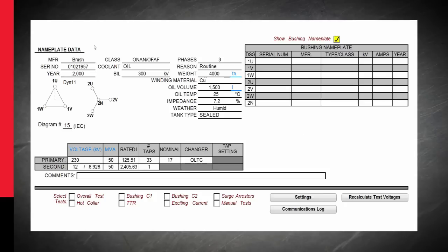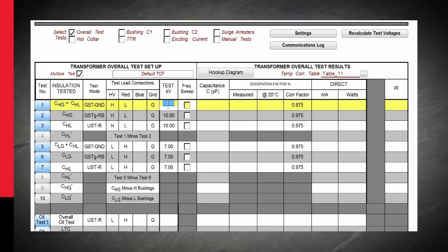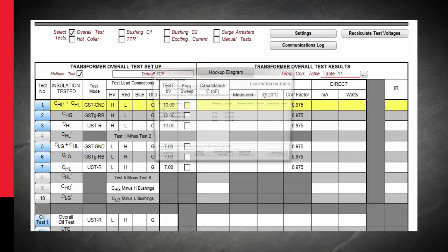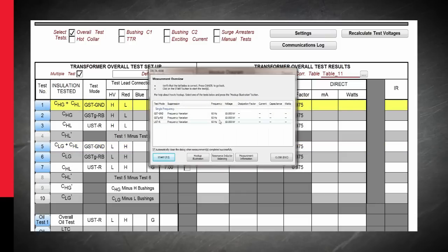We are now required to fill in nameplate information on our two winding transformer form. This includes critical information such as oil temperature, required to evaluate test results. Next, we check off our overall test. We ensure that the proper test voltages are set for both high side and low side testing. Once properly set, we depress the test button and test sequence will begin.